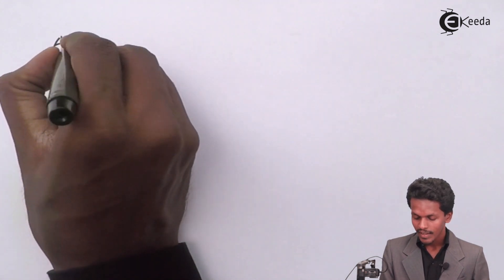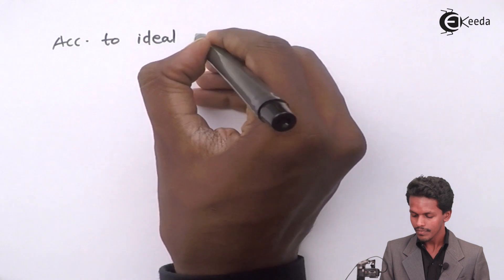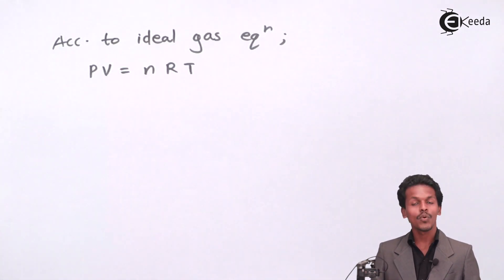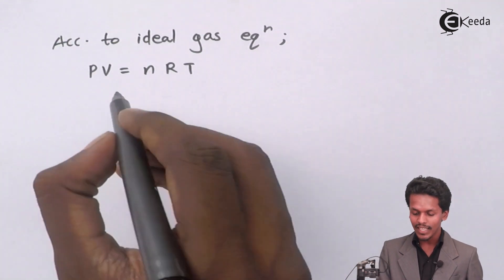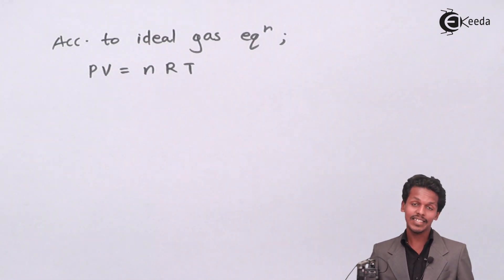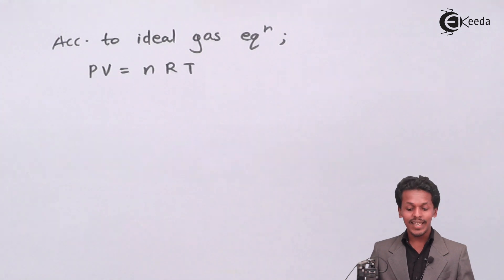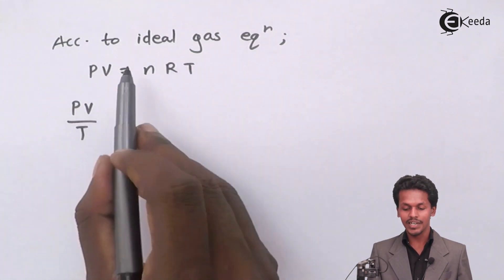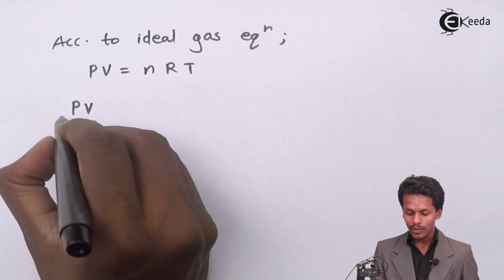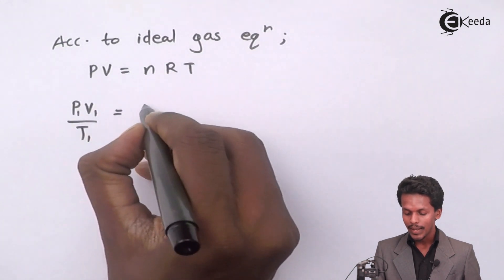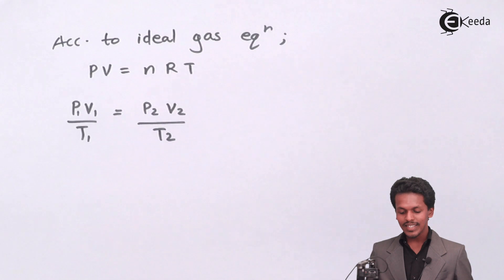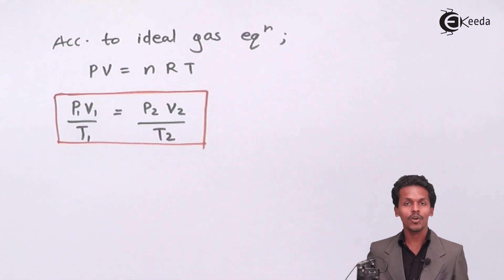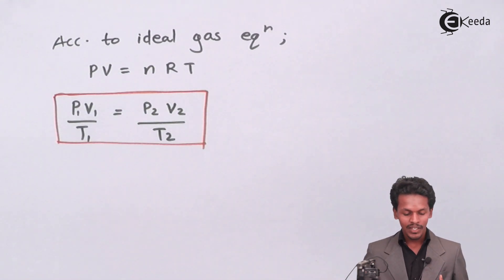According to the ideal gas equation, PV = nRT. Since the number of moles and the gas constant R are both constant, PV/T is a constant equal to nR. Since we have two conditions, we can write the combined gas equation: P1V1 / T1 = P2V2 / T2.